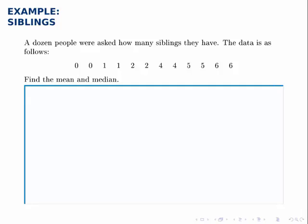Here we're asked to compare the mean and the median of a small data set. A dozen people were asked how many siblings they have, and this data set records their responses. If we calculate the mean and the median, as we've done in previous examples, we find that the mean of this data set is 3, and the median is also 3.